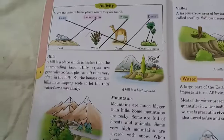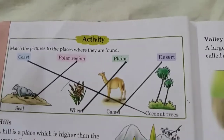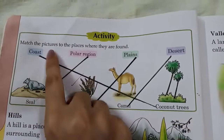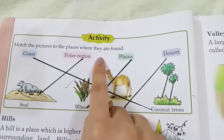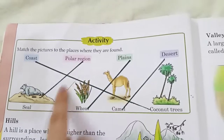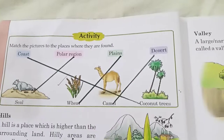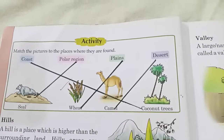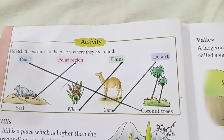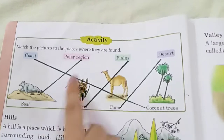Let us go to page number four. At the top of the page there is an activity. Children, match the pictures to the places where they are found. Use a scale to draw straight lines for the activity. Look at this activity carefully and match the things with their places.